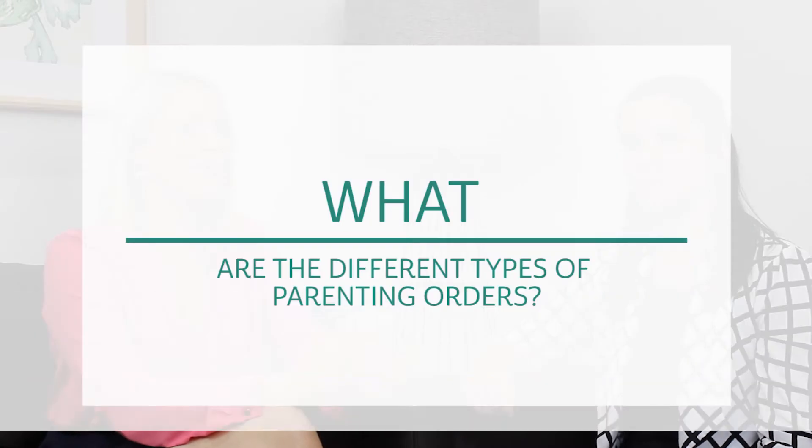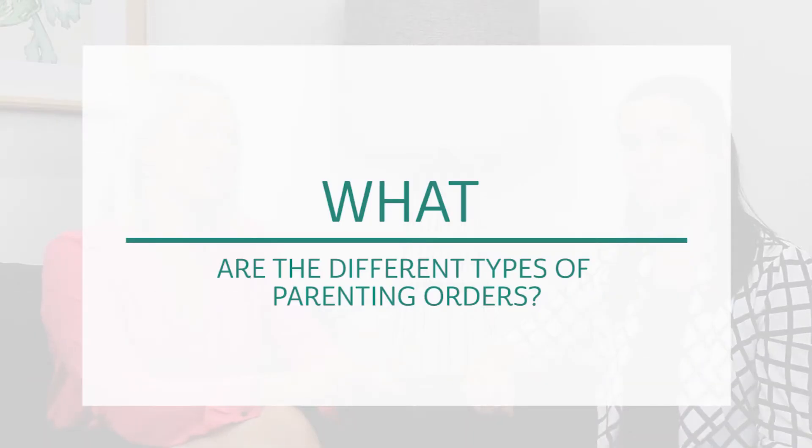A parenting order is a document detailing the parenting arrangements of a child or children. When one of these orders is put into place, it's important that parents know what's involved. So tell me, what are the different types of parenting orders?